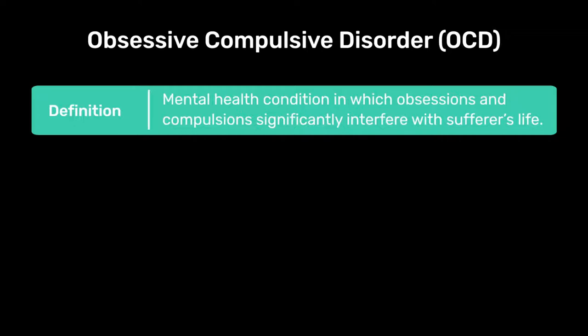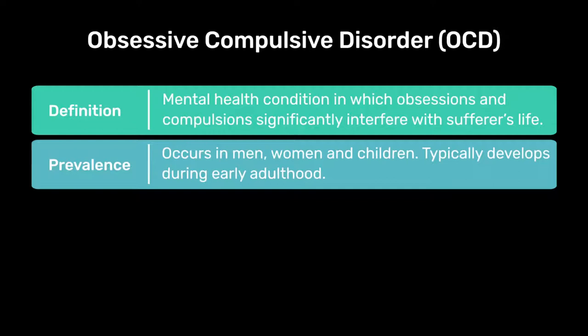OCD can affect men, women and children equally. It can develop during puberty but typically develops during early adulthood, and it's characterised by two main features: obsessive thoughts and compulsive behaviours.